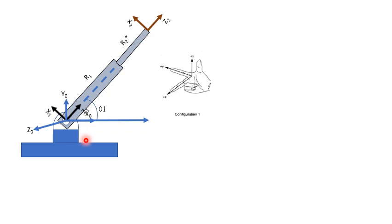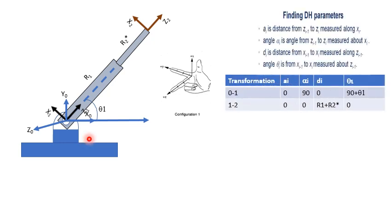The next step is to fill in the DH table. This is the way we can fill in the DH table. These are the rules. If you follow these rules, then your DH table for frame 0 to 1 and 1 to 2 would be like this. You just have to follow these rules.